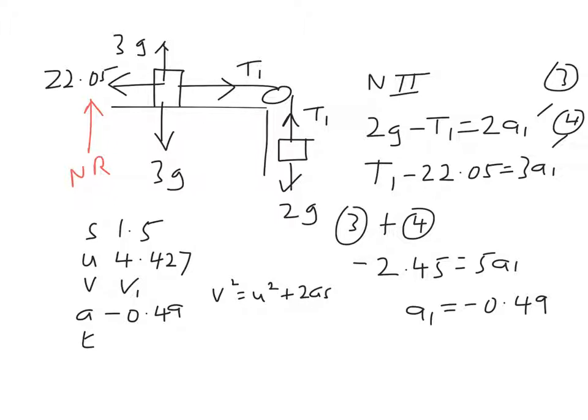So that's u squared, that's 19.6, 4.427 squared. It's minus this time because it's decelerating, so it's 2 times 0.49 times 1.5, that's 1.47. So v is the square root of 19.6 minus 1.47, works out to be 4.26, which is 4.3 to 2 sig figs. We've used g as 9.8, so we should give our answer to 2 sig figs.